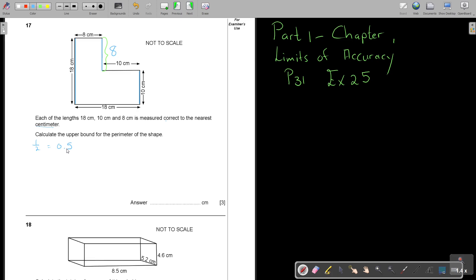For the three different ones, I can say: if it's 18, the upper bound is 18.5 and the lower bound is 17.5. And then the same for 10, the upper bound is 10.5 and the lower bound is 9.5. And then 8, the upper bound is going to be 8.5 and the lower bound is 7.5. So every time I subtract and add. Now, if it's only addition, I'm going to add, add, add.